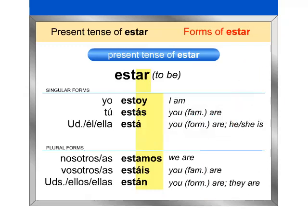The yo form, estoy, is irregular. In addition, all conjugated forms except yo, nosotros, and nosotras have an accent on the letter A.